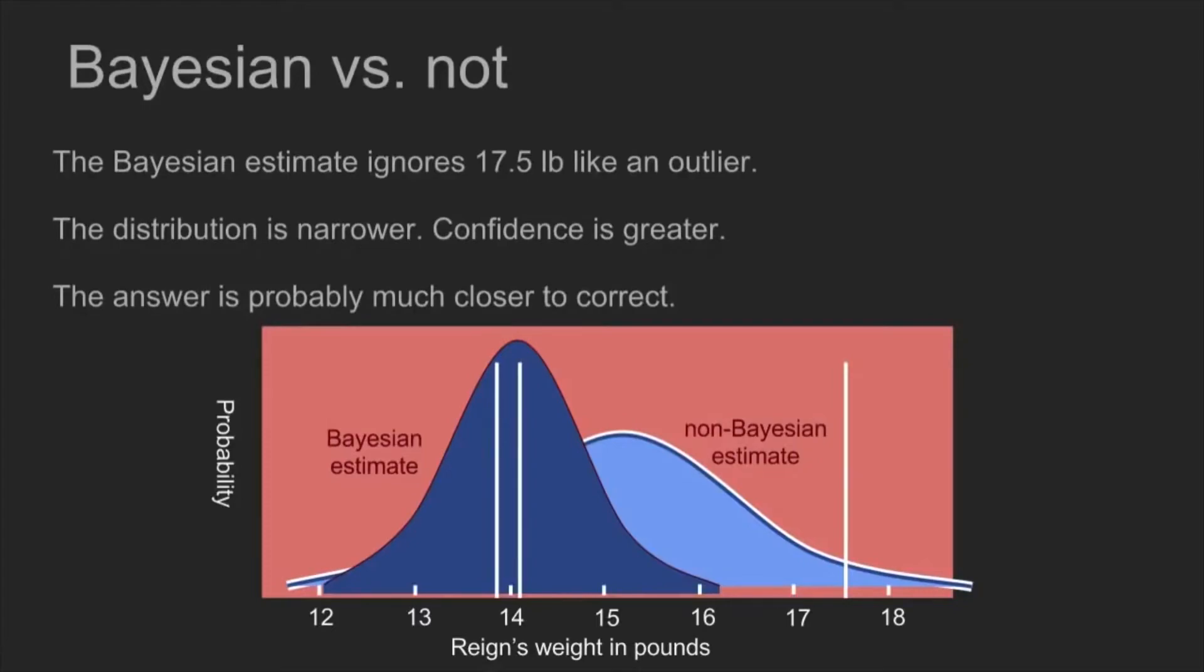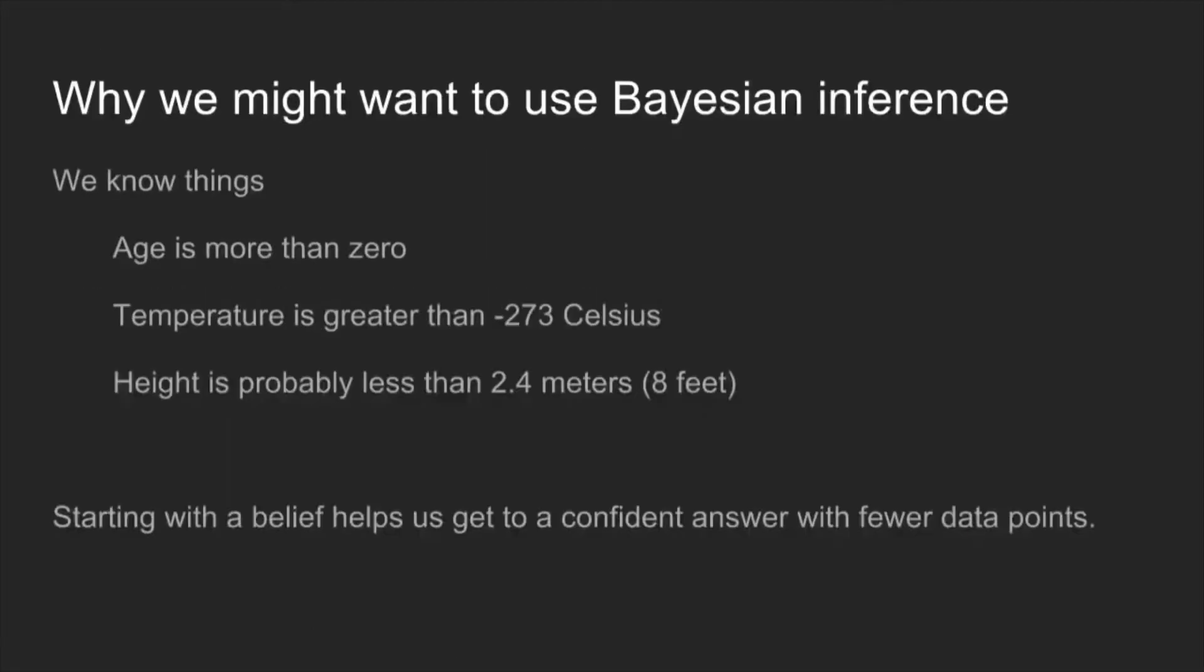So this is how Bayes' theorem is used most often in data science or in analysis. It's a prior that you then update based on your measurements to sharpen up and get a revised set of beliefs. So there's a lot of times that it makes sense to use Bayesian inference. Sometimes we just know things, like if we're measuring age, we know that everyone is more than zero years old. And so we can take that information and build it in and we can get sharper estimates with fewer measurements.